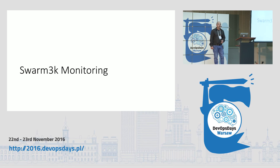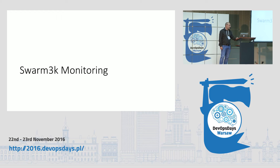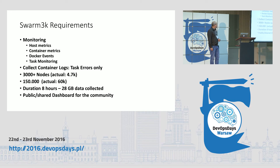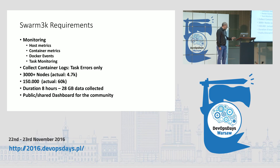We tested this deployment of agents in the Swarm 3K community project, and our agent was deployed to 4,700 nodes at the end. The requirement for us was to collect host metrics, container metrics, Docker events, and we did task monitoring. The plan was to reach 3,000 nodes — the test actually reached 4,700 nodes. We expected 150,000 containers, but something went wrong and we reached only 60,000 containers during this first test. On that one day, we collected 28 gigabytes of metrics from the 4,700 nodes.